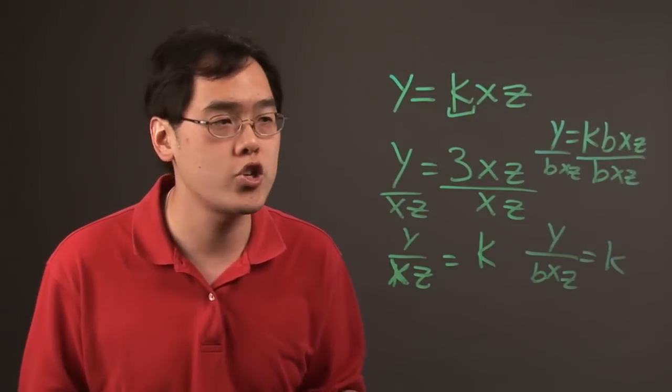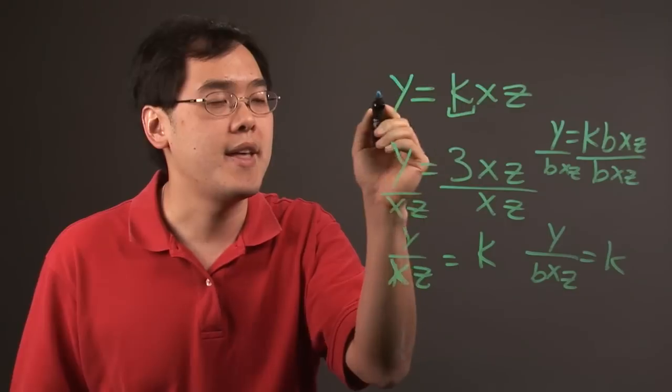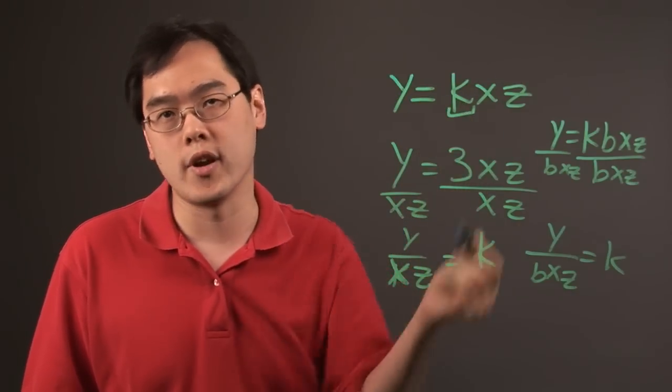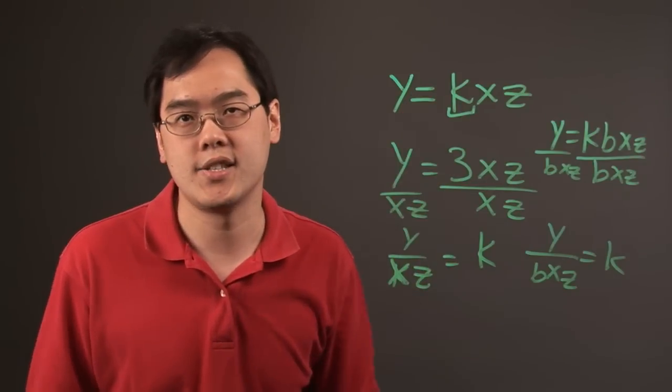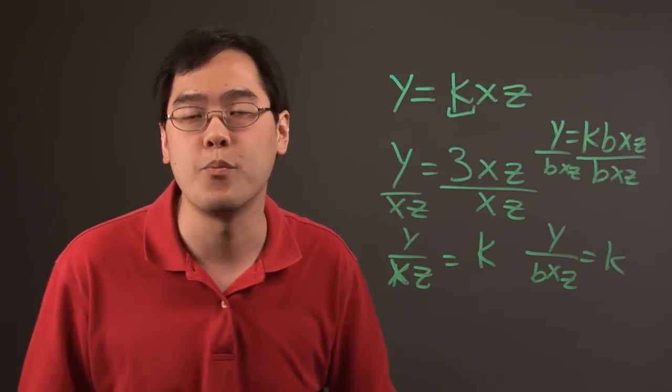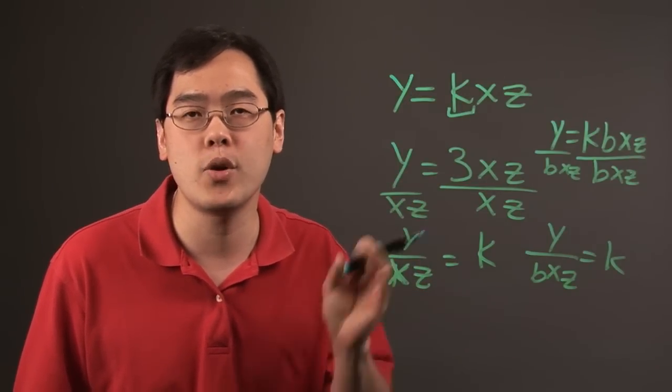The bottom line is in a joint variation proportion, you have one variable that's in proportion to two or more variables on the other side with a constant of variation in between. I'm Jimmy Chang, and that's the definition of joint variation proportion.